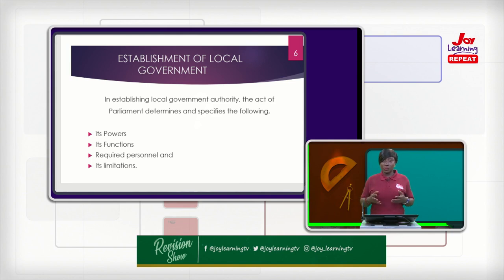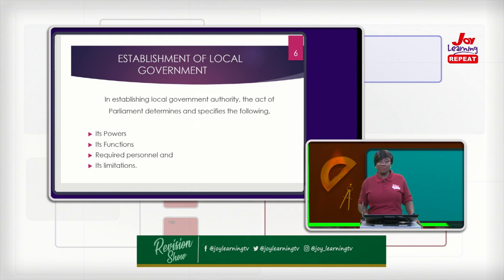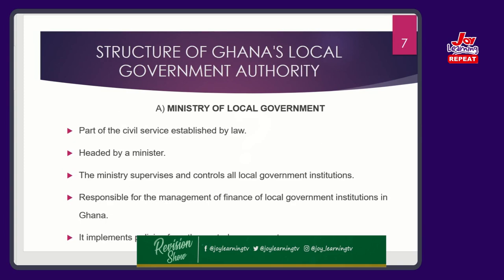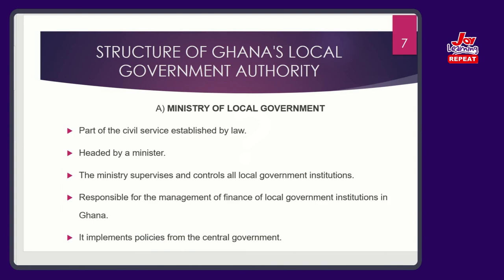Local government administration is semi-autonomous, partly independent, partly non-independent. They are monitored by the central government and sometimes implement directives from the central government. They are, in a way, quite autonomous and they are a sub-governmental body. In most cases, local government administration is not only experienced in Ghana — it is experienced in almost all democratic states in the world. There are three types of systems, which we'll outline now.